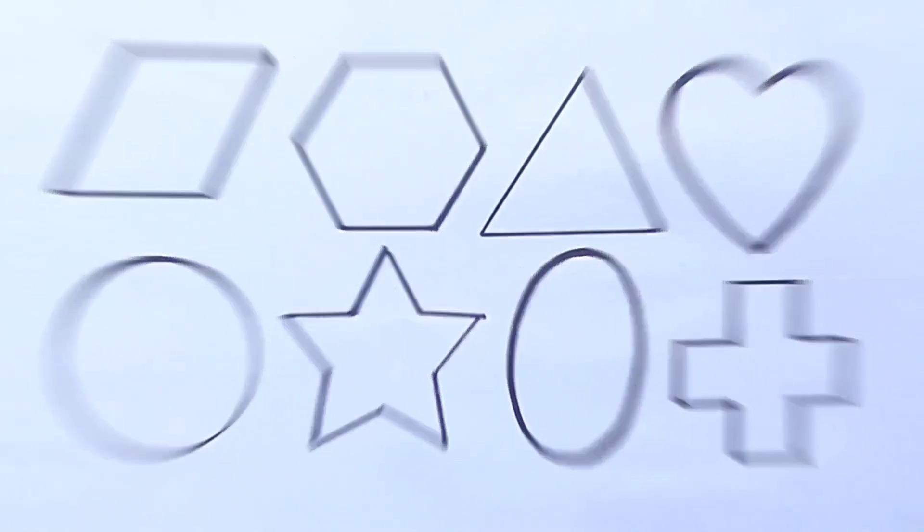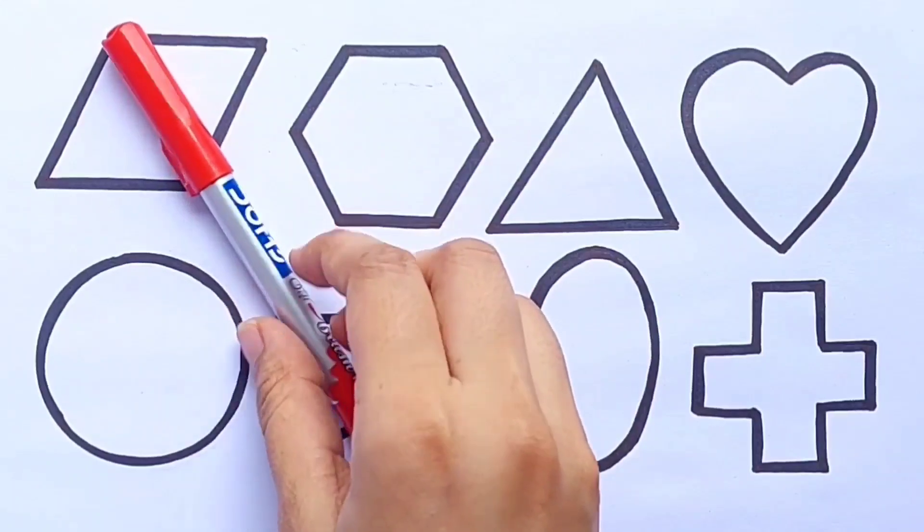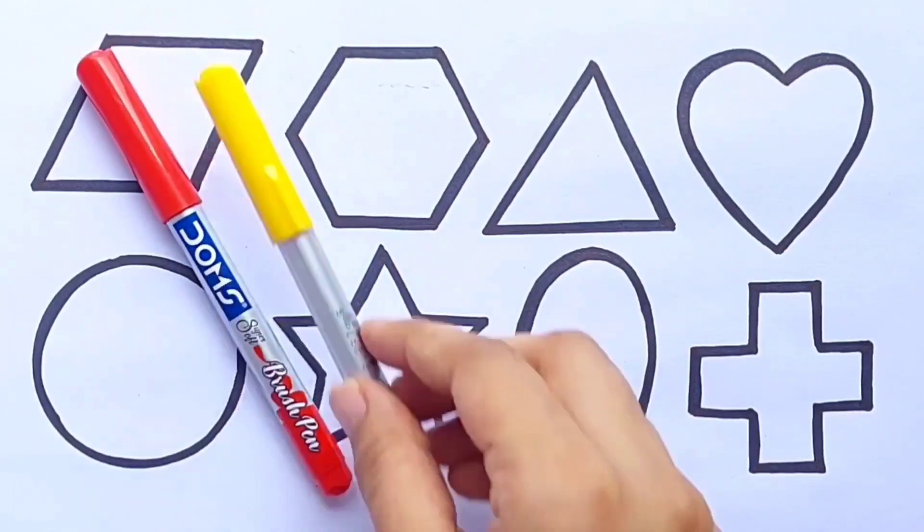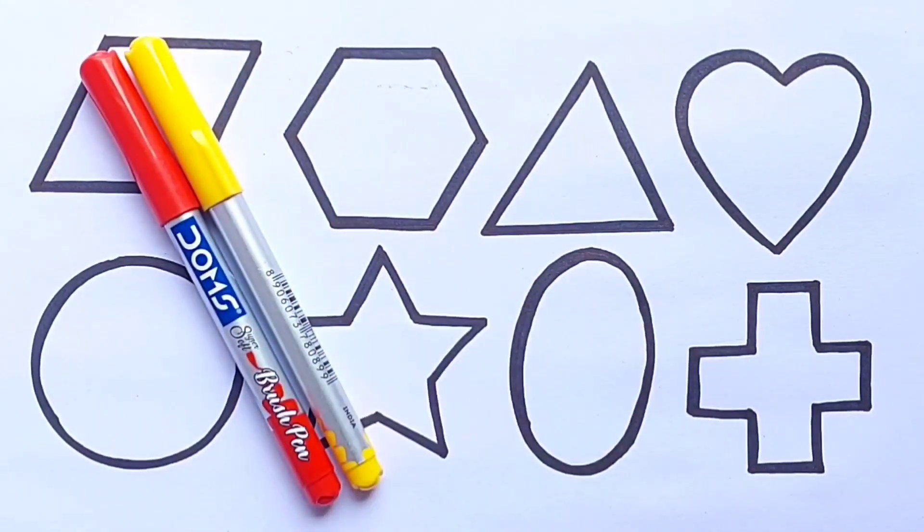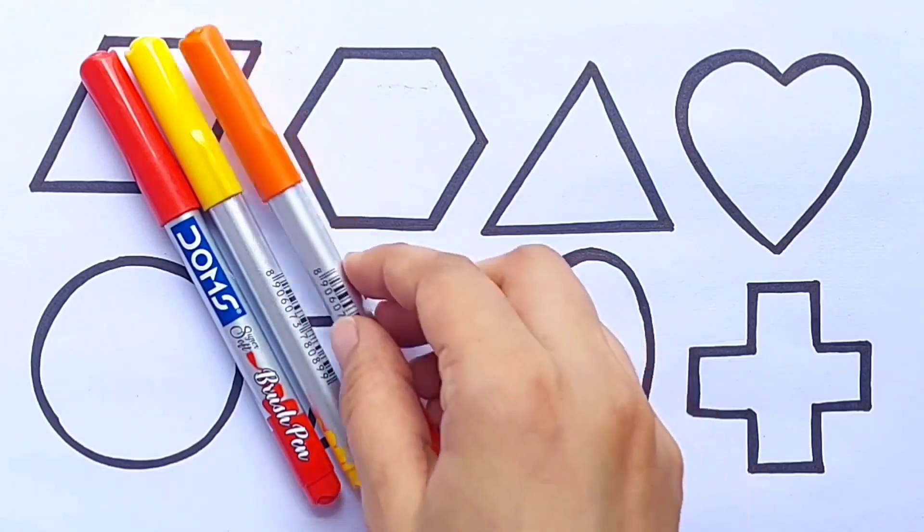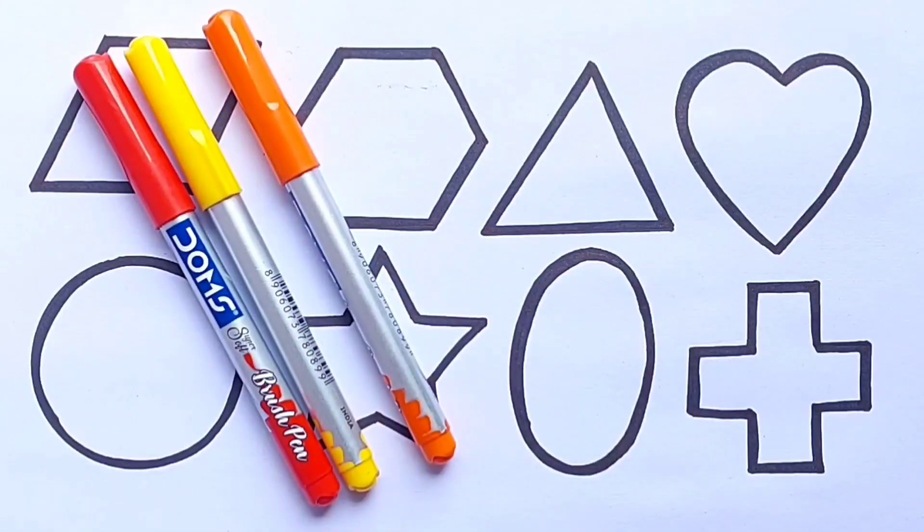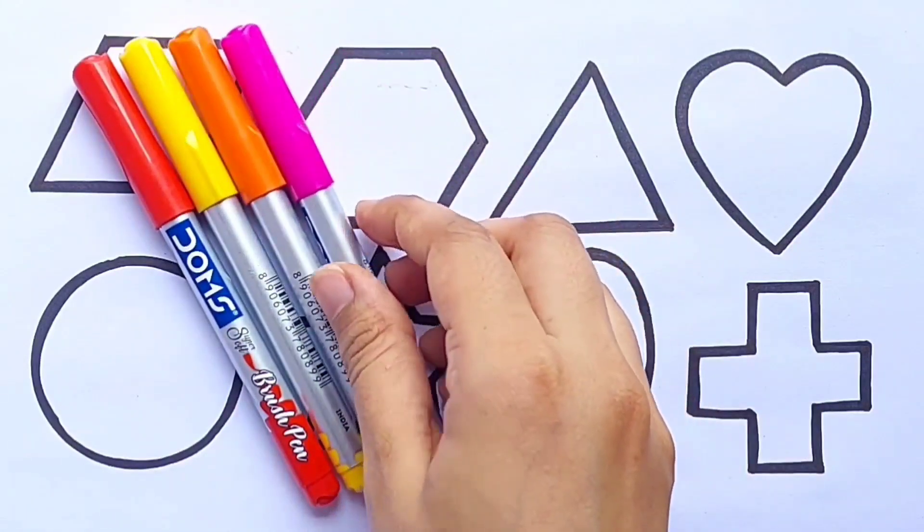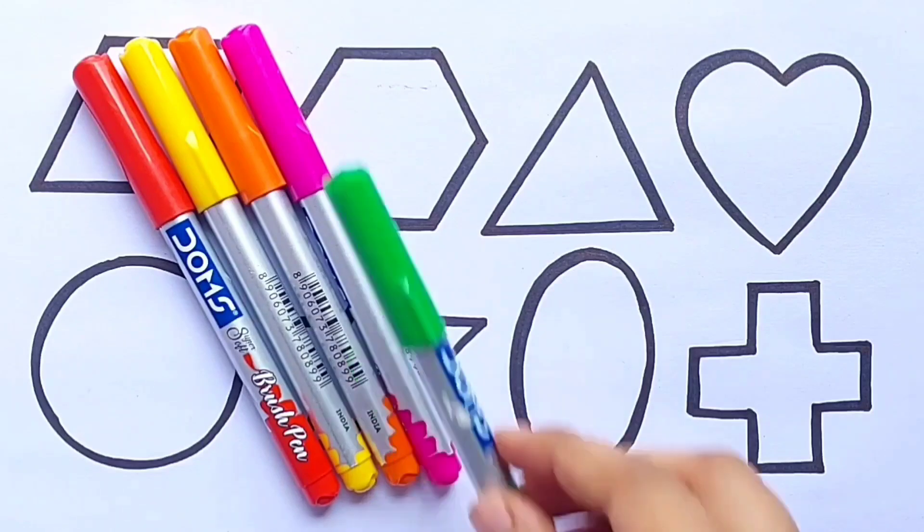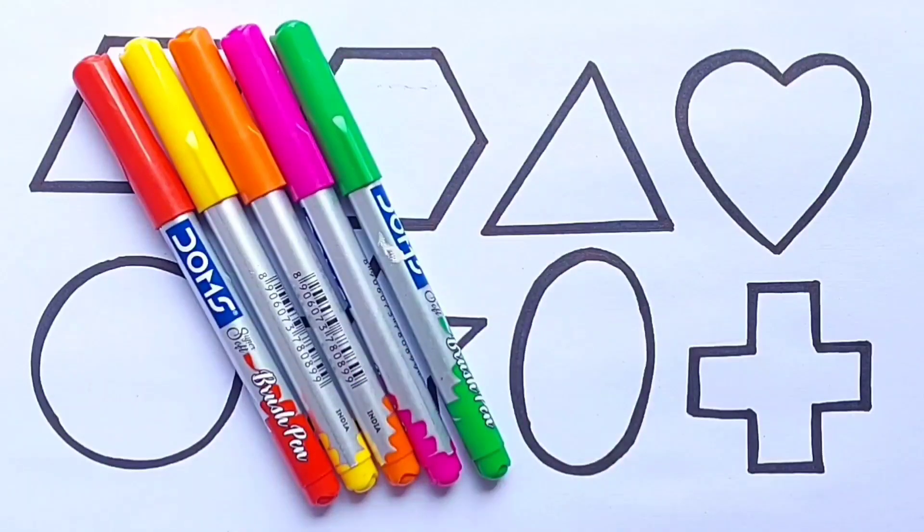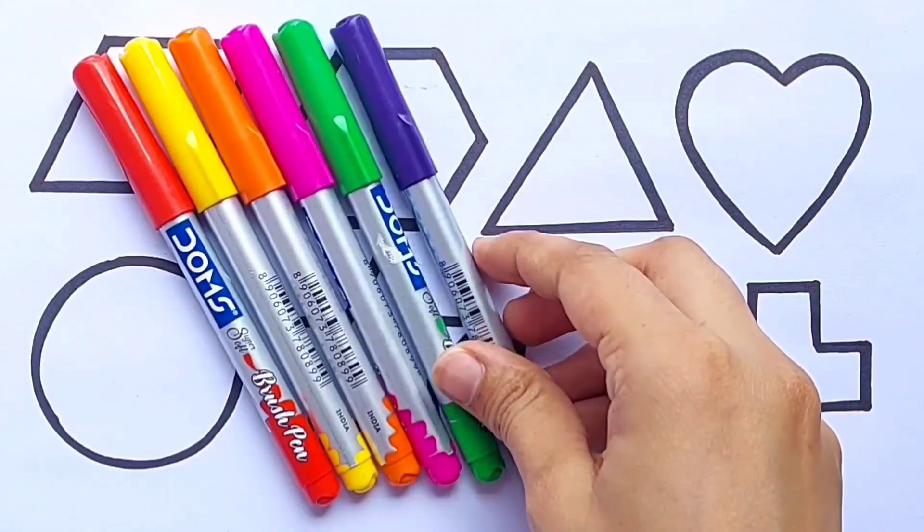Cross. Let's learn color's name: Red color, Yellow color, Orange color, Pink color, Light green color, Purple color.